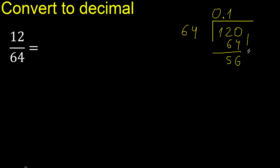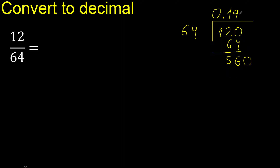There is no number, therefore complete — always complete with 0. 64 multiplied by which number? 64 multiplied by 9 is 576, which is greater, therefore 8 multiplied by 8.